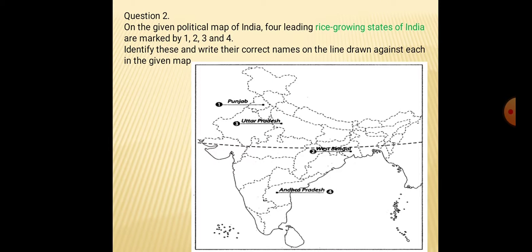Second question is for rice growing states of India, also marked as 1, 2, 3 and 4. Identify these and write their correct names. First rice growing state is Punjab, second is West Bengal, third is Uttar Pradesh, fourth is Andhra Pradesh.